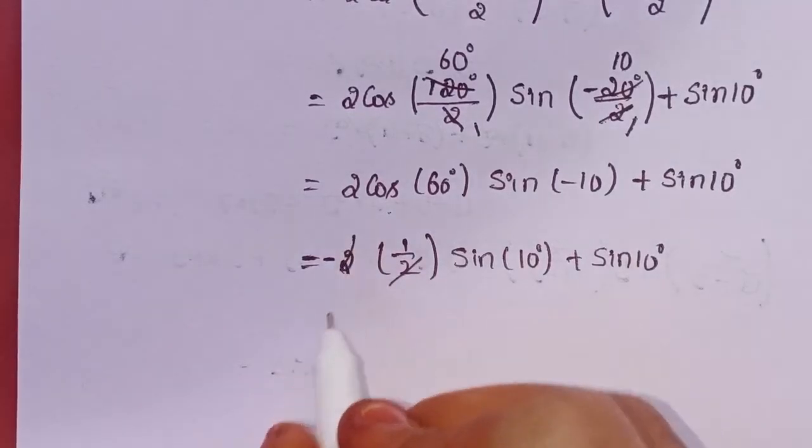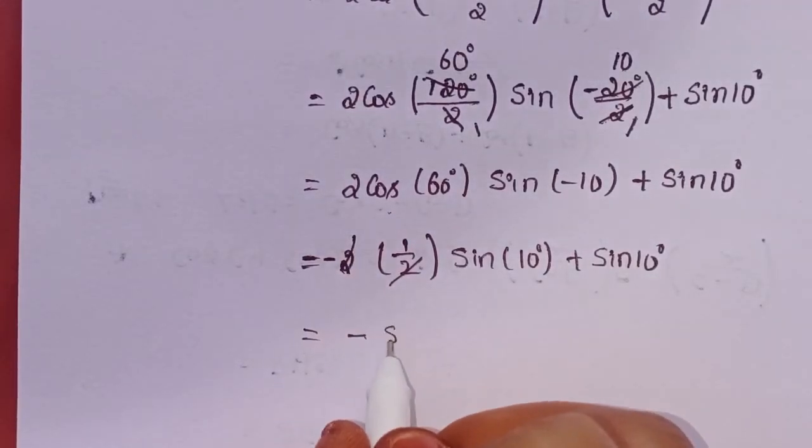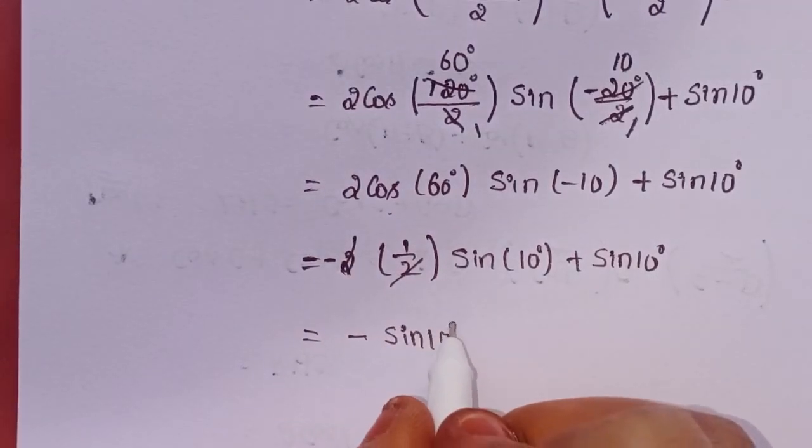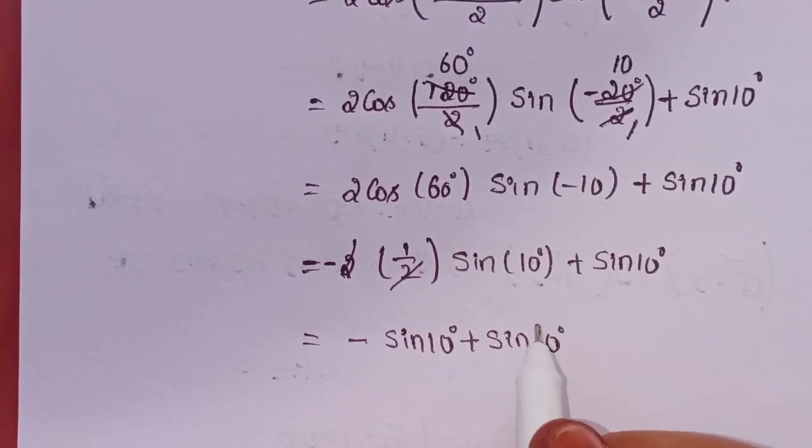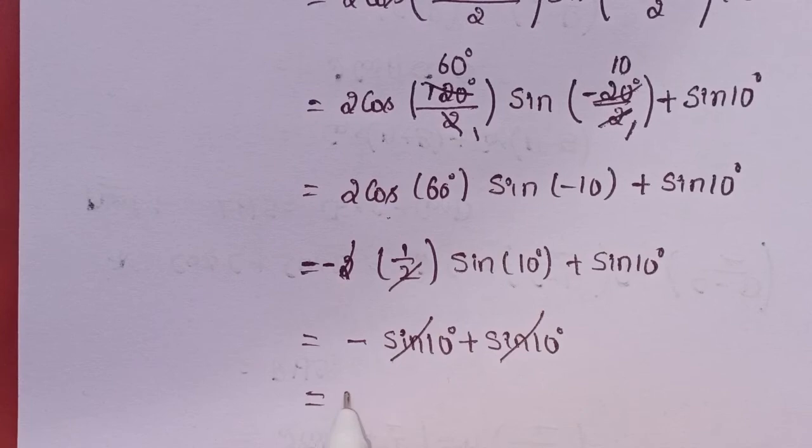The 2 cancels. Minus sin 10 degrees plus sin 10 degrees. These also cancel. Result is 0.